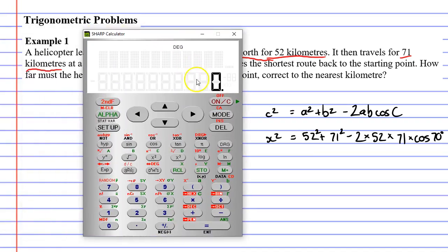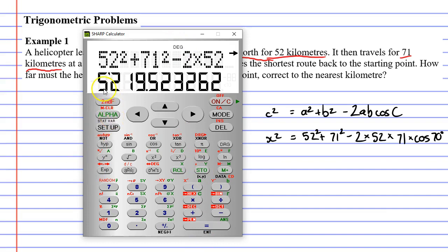So all we need to do now is just pull up our calculator and work it out. So 52 squared plus 71 squared minus 2 times 52 times 71 times cos 70. Making sure it's deg or d for degrees at the top, otherwise it'll be wrong. Equals, and we get quite a long number: 5219 - we'll do it to one decimal place for now - 5219.5.